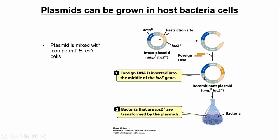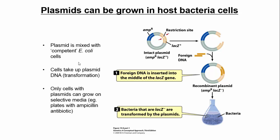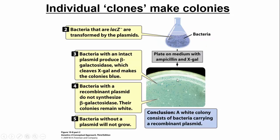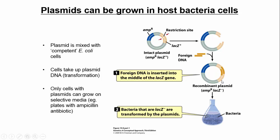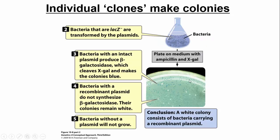Once you have your construct, you transform it into E. coli cells. Bacterial cells that are especially good at taking up DNA are called competent cells, which you can buy from a biotech company. You then grow the bacteria on a plate with antibiotic. If you see colonies growing, you know the bacterium got some version of your plasmid — either your construct or the empty vector — because it survived on the antibiotic plate, confirming it has ampicillin resistance.